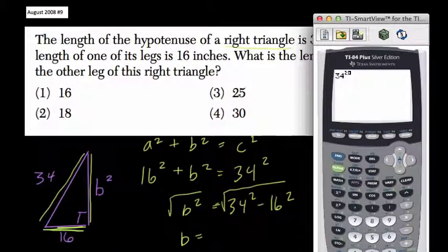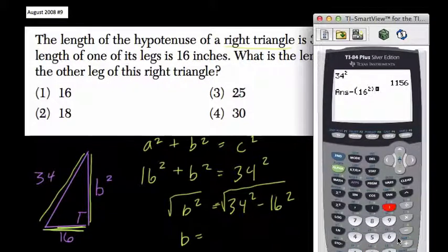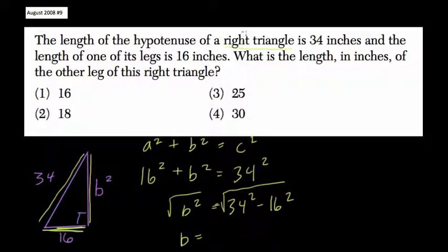So I'm going to look at 34 squared to the second power. That's 1,156 minus, I'll put this in parentheses, 16 squared. So that's 900. So b is actually equal to the square root of 900.